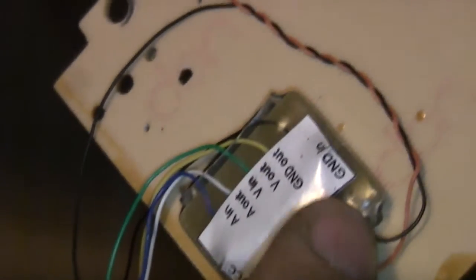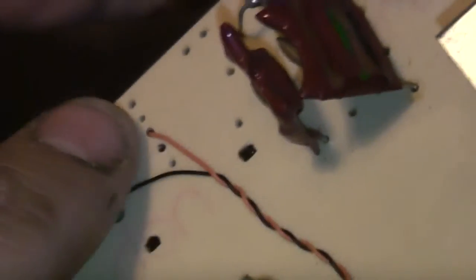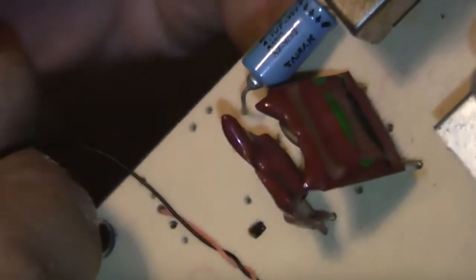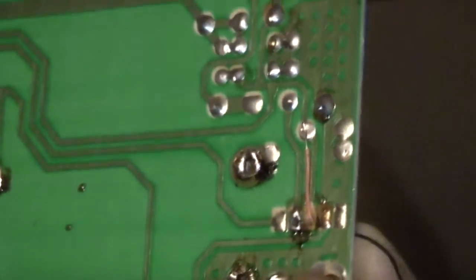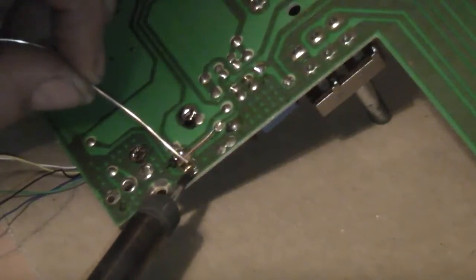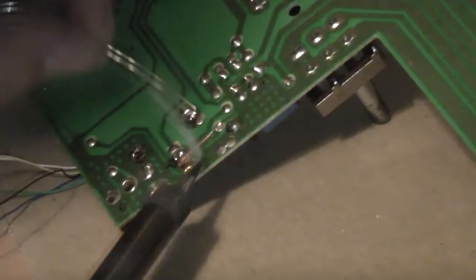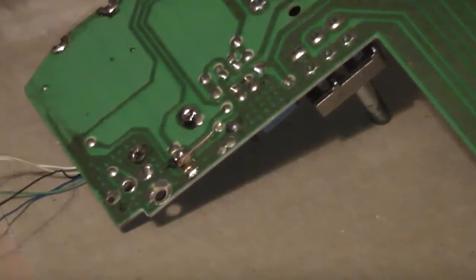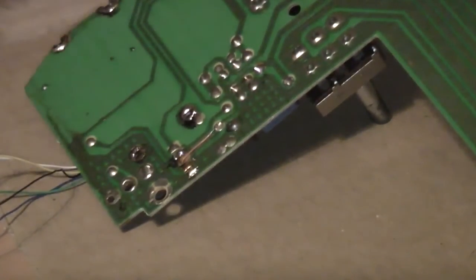Next is our ground in. Ground in comes around and goes to the very outside one here. We're going to snip that wire, pass it through the hole, and solder it from the other side. All right, that's the ground.